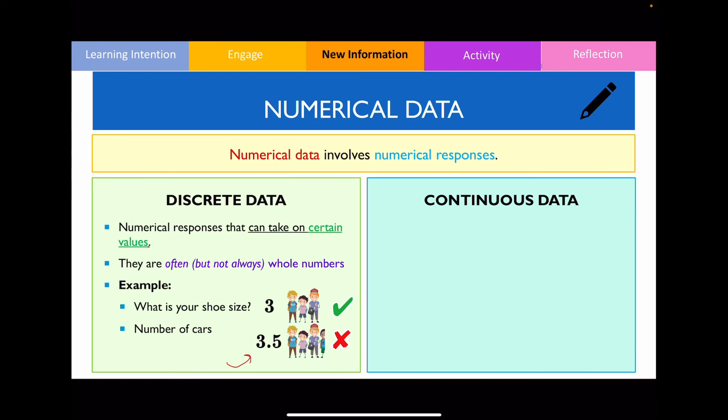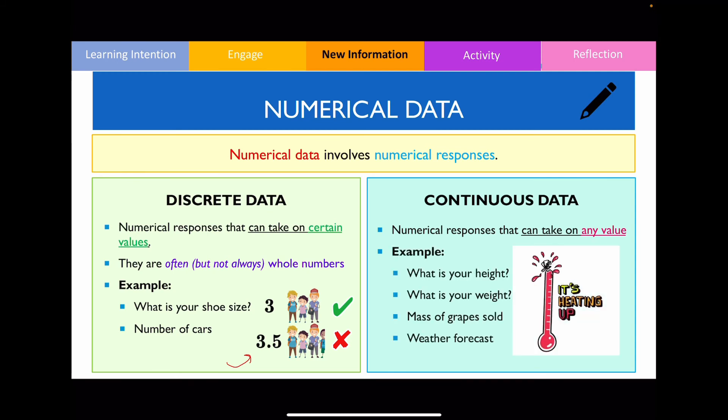In contrast, continuous data will have numbers where it can take on any value. So typically with these responses, you can actually get decimals. Examples of continuous data would be asking for your height, your weight, the amount or mass of grapes that are sold, or the weather forecast. So in these examples, they will take on any value within a given range and you'll typically expect to see decimals.